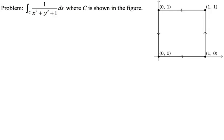In this video we are going to do the scalar line integral of 1 over the quantity x squared plus y squared plus 1, ds (arc length), where c is shown in the figure. This is piecewise linear, and there are four different line segments.